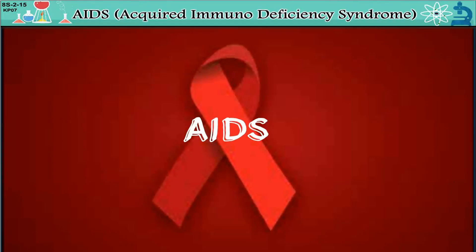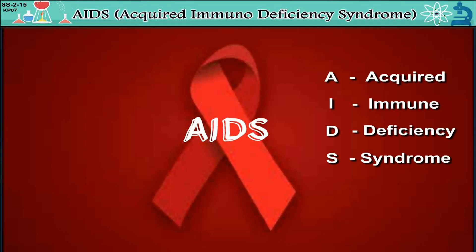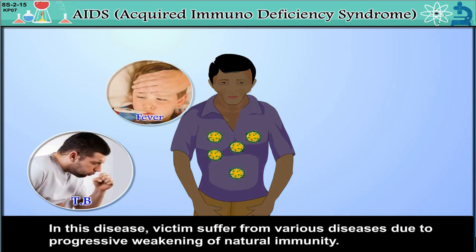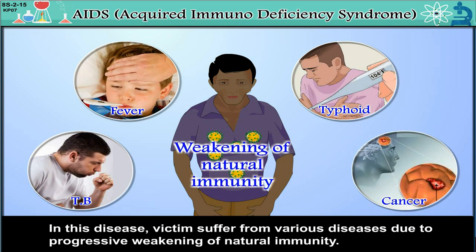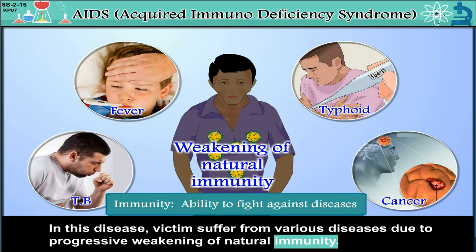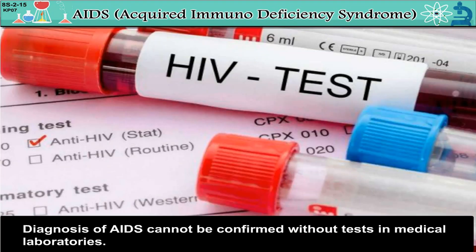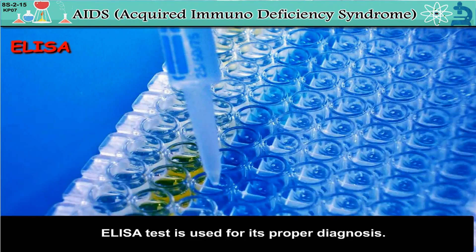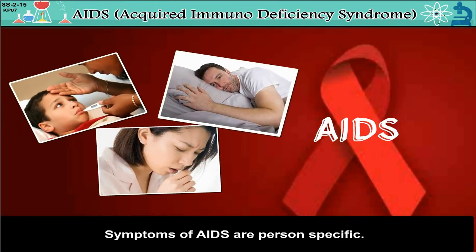AIDS — Acquired Immunodeficiency Syndrome. This disease is caused by HIV, Human Immunodeficiency Virus. In this disease, the victim suffers from various diseases due to progressive weakening of natural immunity. Immunity means the ability to fight against diseases. Diagnosis of AIDS cannot be confirmed without tests in medical laboratories. ELISA test is used for its proper diagnosis. Symptoms of AIDS are person-specific.